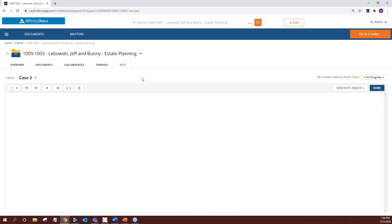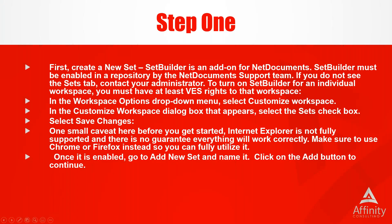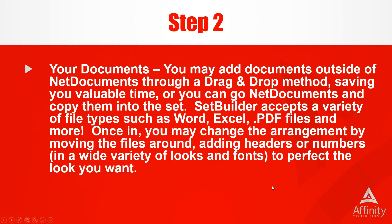I'm going to walk you through how to start from the very beginning. I'll click the Add Set Builder button, name it Case 2, and hit Add. Give it a second — and now we already have the beginnings of our binder. Step two is your documents. You can add documents outside of NetDocuments through a drag-and-drop method, or you can go through NetDocuments and copy them into a set. SetBuilder accepts a variety of file types: Word, Excel, PDFs — most things you'll be using.